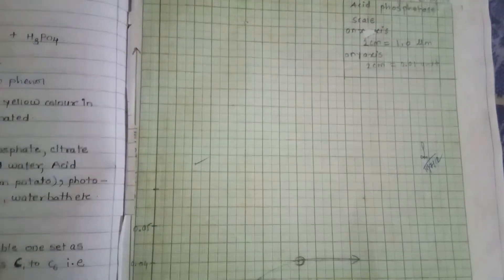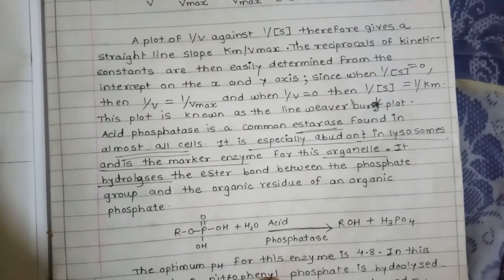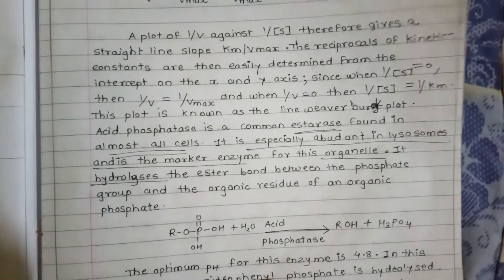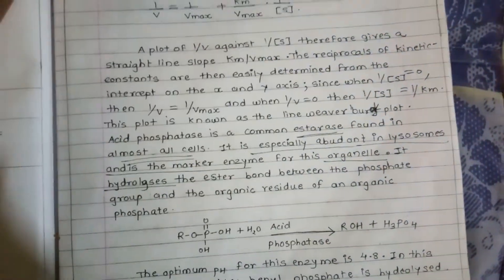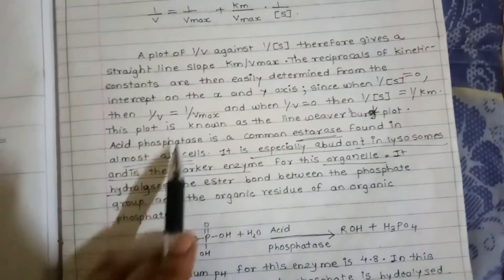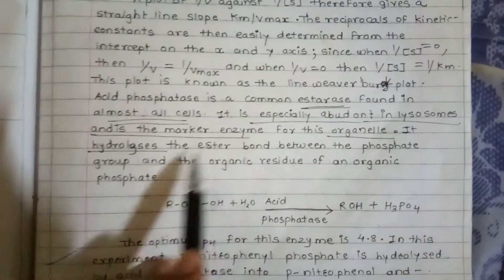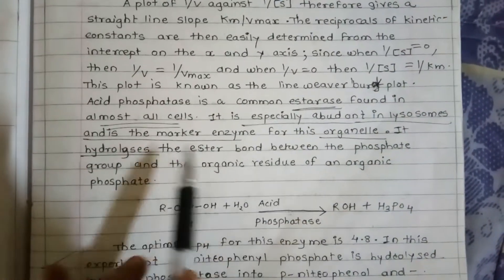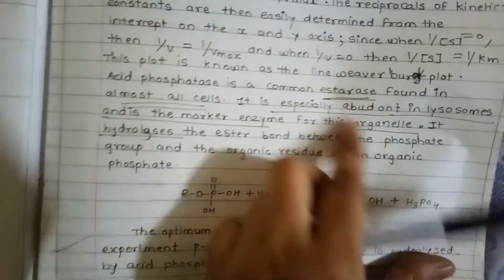Acid phosphatase is a common esterase belonging to the hydrolase class. It is found in almost all cells but is most prominent in lysosomes, making it a marker enzyme for lysosomes. It hydrolyzes the ester bond between the phosphate group and the organic residue of organic phosphate. Its optimum pH is 4.8.